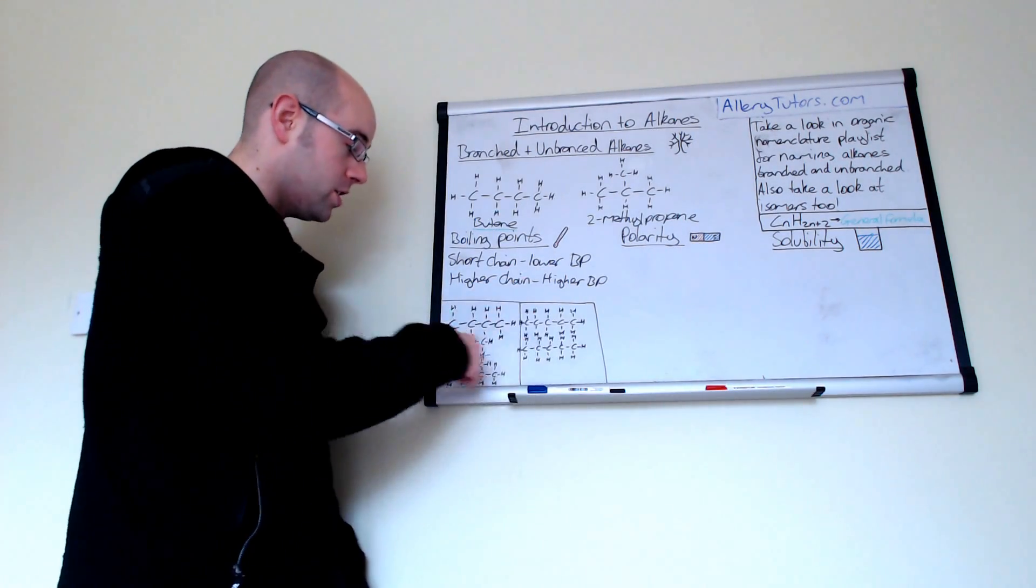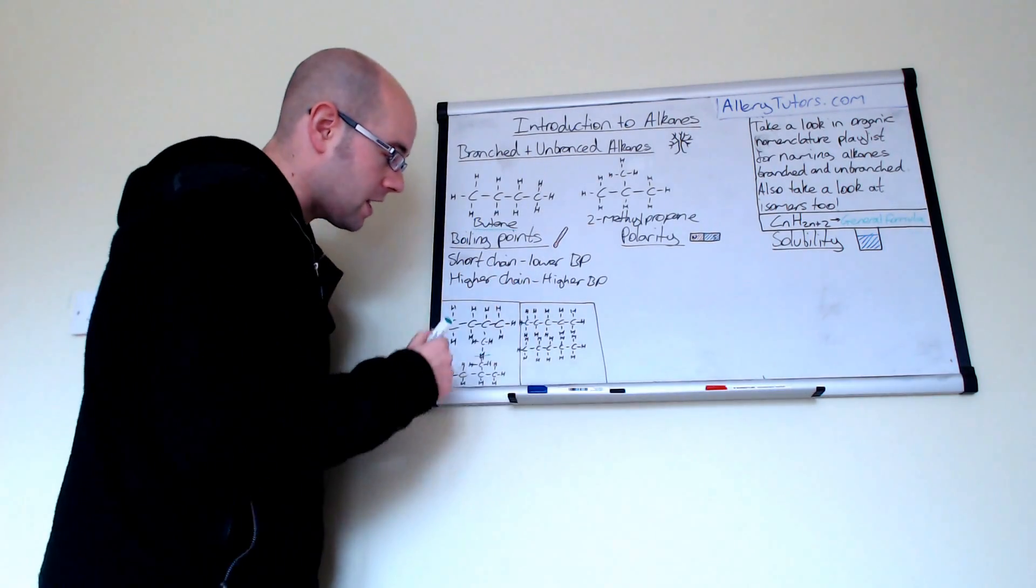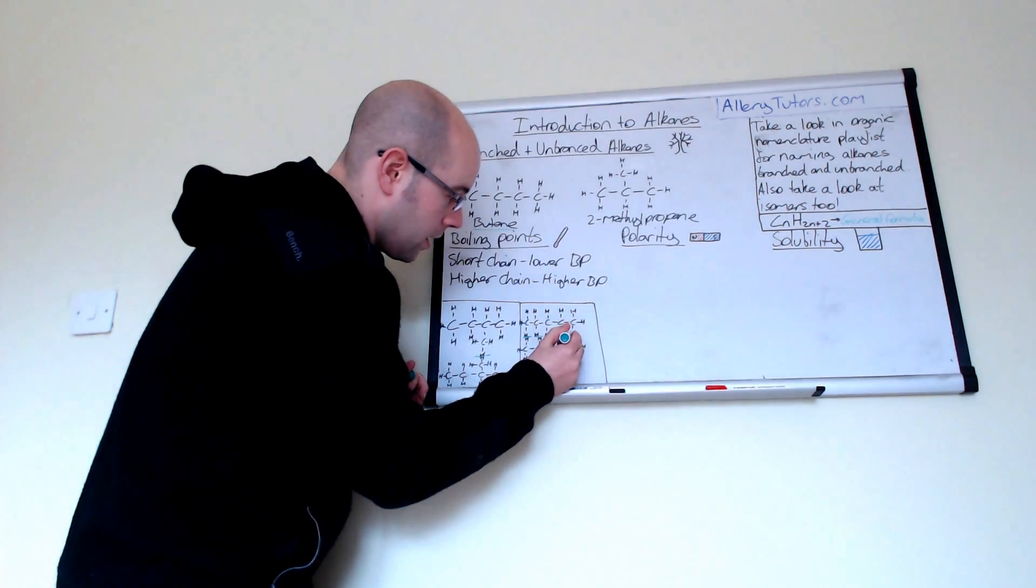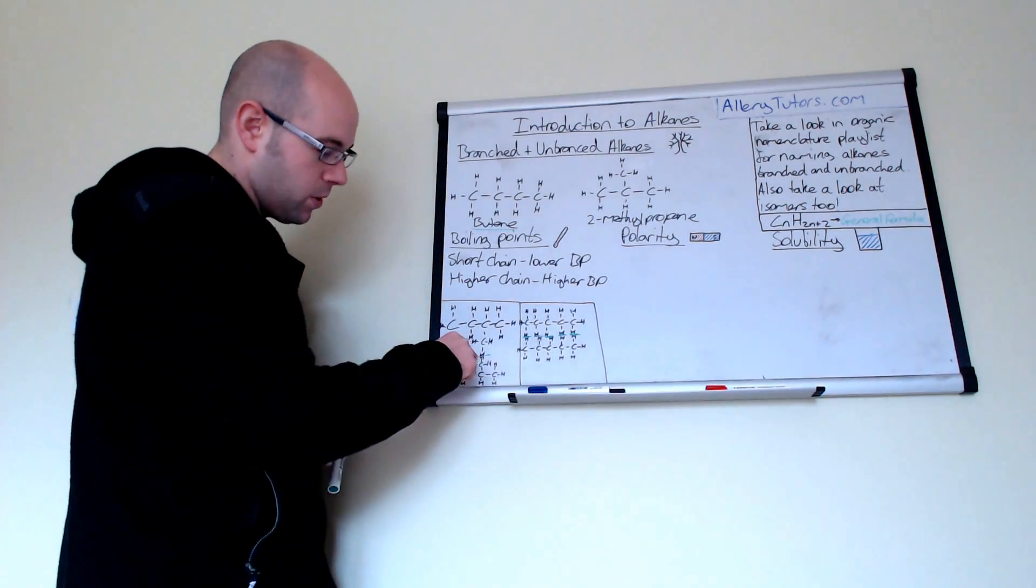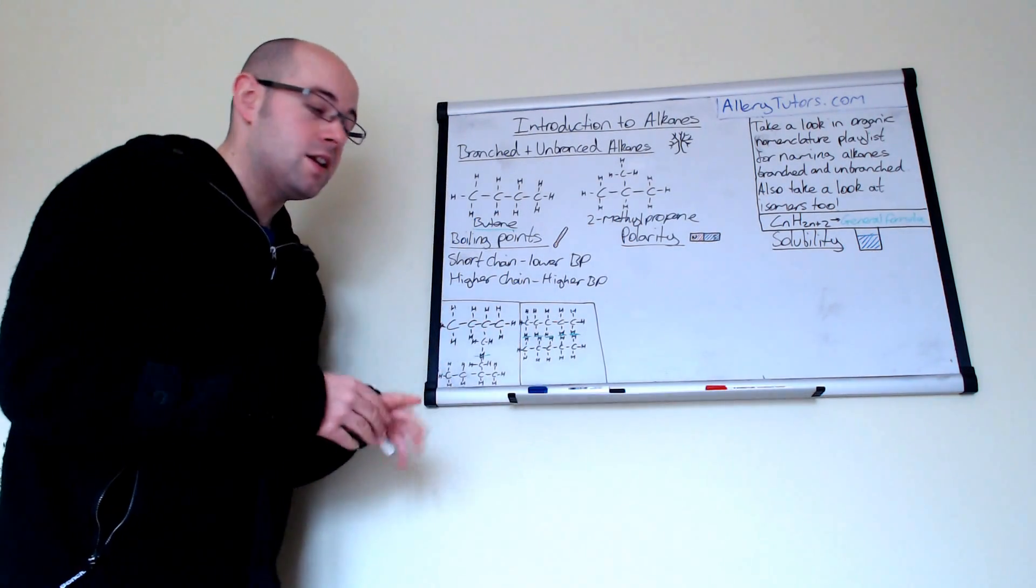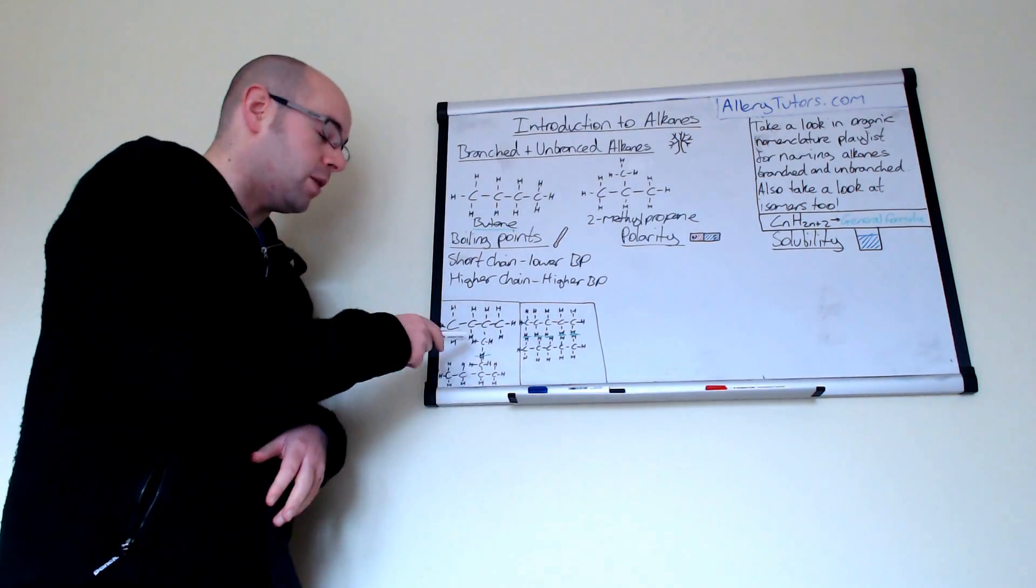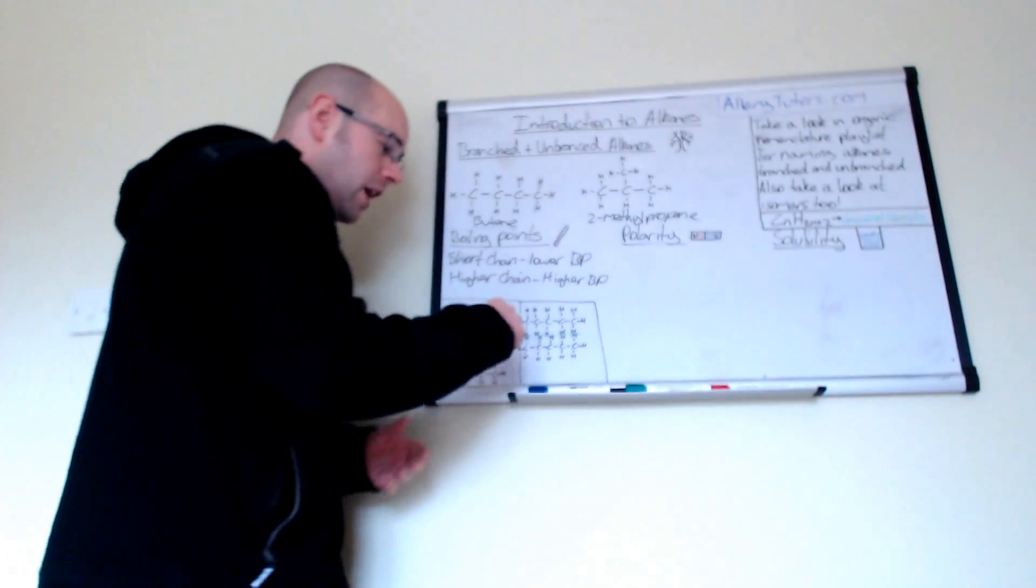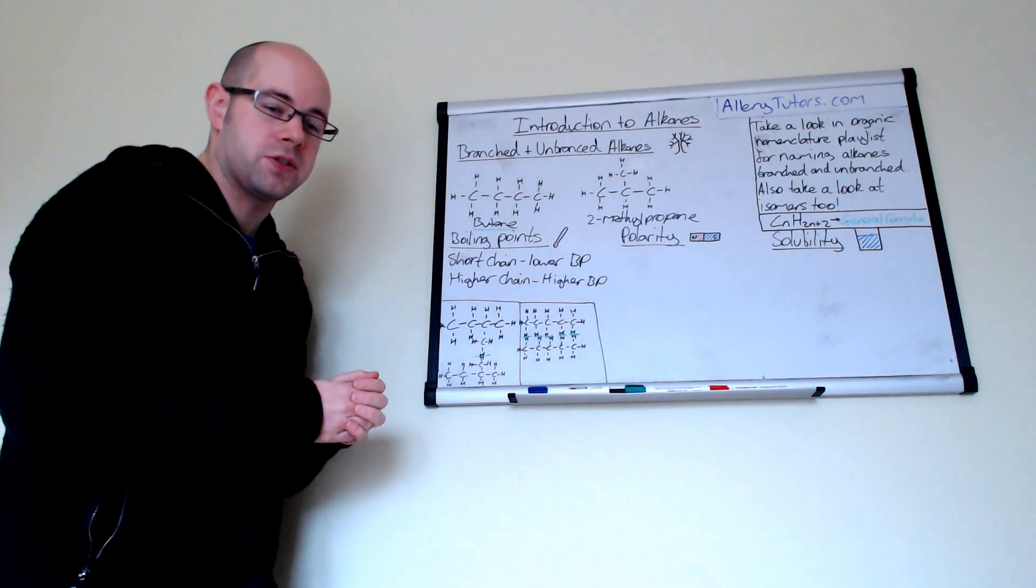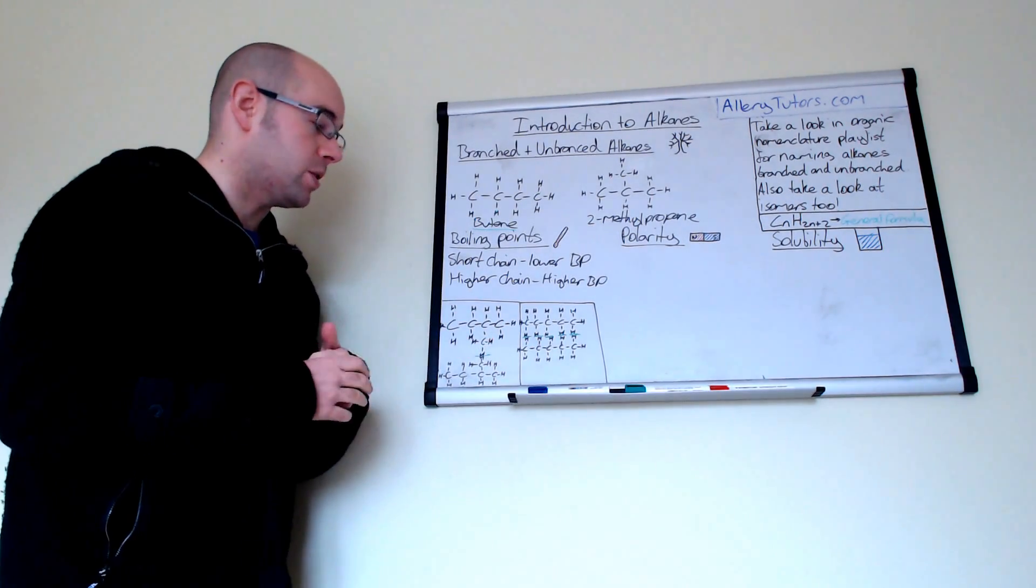But if we take the same molecule, just an isomer of it, one that's actually unbranched, you can see that actually there's interactions between these molecules at more points. You can see where the green lines are. So where this one there was only one interaction, in this one there's loads of interaction. And straight chain, non-branched molecules actually have a higher melting point than your branched ones here. So that's really important that you've got to be able to know that. And you've got to talk about van der Waals and intermolecular forces when we're discussing the melting and boiling points, or mainly the boiling points of hydrocarbons.